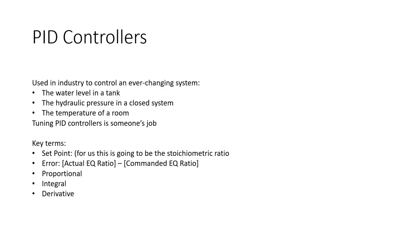PID controllers are used in industry and manufacturing to control any type of process — water levels in a tank, hydraulic pressure, pneumatic pressure, temperature of a die or mold, or temperature of a room. Basically anything that's ever-changing that you need to control and move to a specific set point. For us, that set point is going to be the stoichiometric ratio.